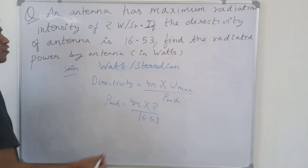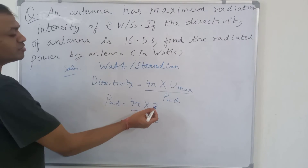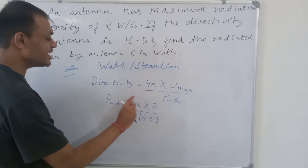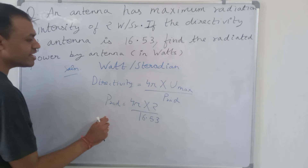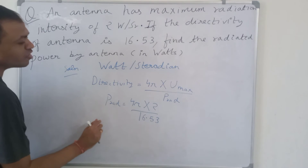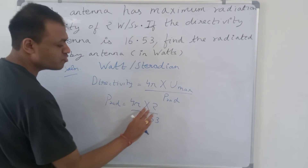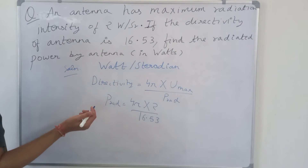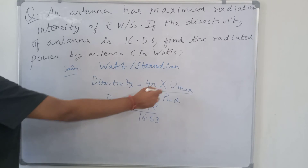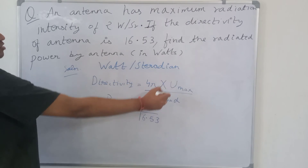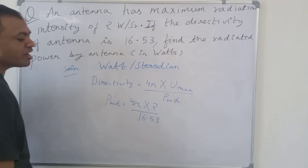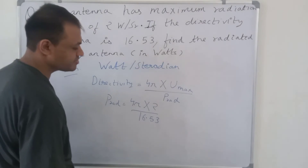The power radiated will be equal to 4 pi into U_max upon directivity. U_max is 2 and directivity is 16.53.